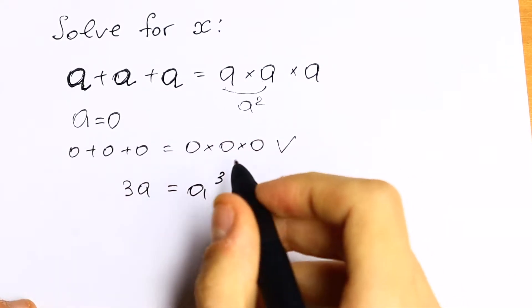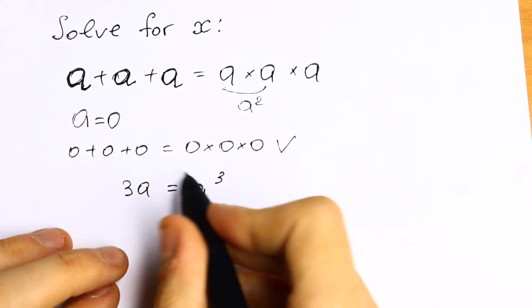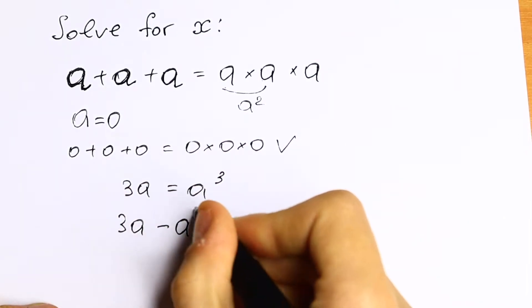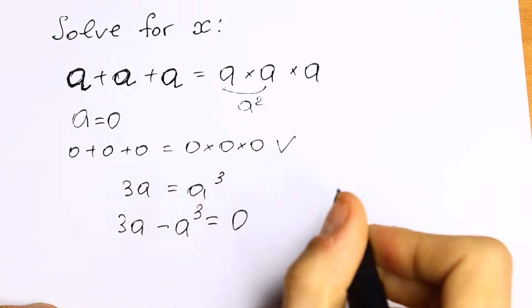How can you solve this equation? So let's bring this a cubed on the left side. We will have 3a minus a cubed equal to 0.